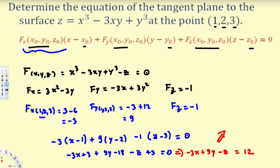Some books prefer to write the equation with a positive leading coefficient. Multiplying everything by -1, we get 3x - 9y + z = -12. That's the equation of the tangent plane. I hope you find this video helpful, see you next time!